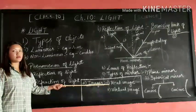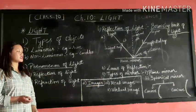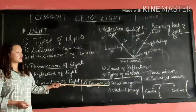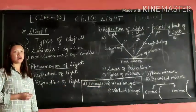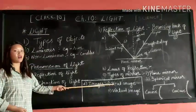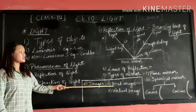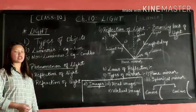Let us see what is a real image. A real image is an image that can be captured on screen. An example of real image: when you see a movie in a cinema hall, the images appear on the screen. That is known as a real image. These real images are always inverted when they appear.